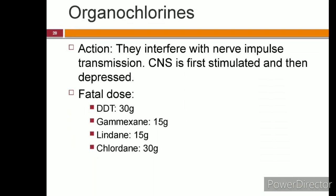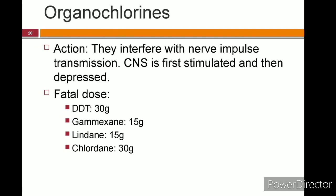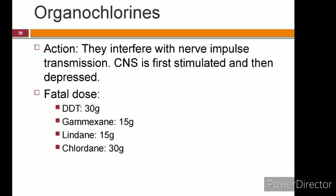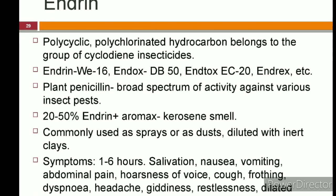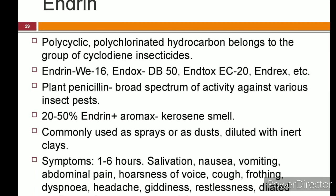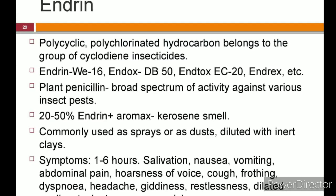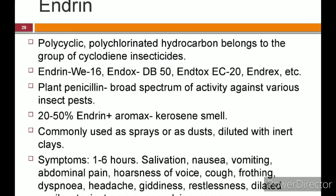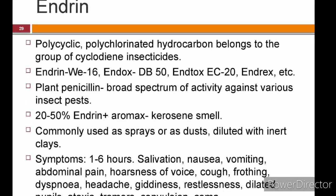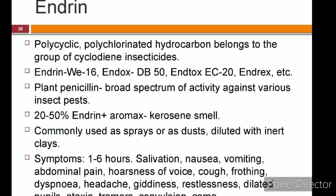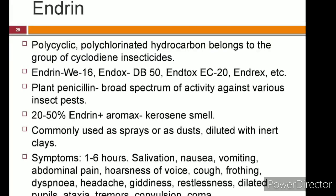Organochlorines interfere with nerve impulse transmission; the central nervous system is first stimulated and then depressed. The fatal dose of DDT is 30 grams. Endrin belongs to the group of cyclodiene insecticides and is also called 'plant's penicillin' because of its broad spectrum of activity against various insect pests. It is available under brand names like Endrin V16, Endrin DB50, Entox EC20, etc. They are mixed with Aromax and hence possess a kerosene-like smell.